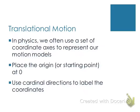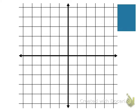I'm going to place the origin where the motion is starting, and then use cardinal directions to label the coordinates. The four cardinal directions are north, south, east, and west. On a flat two-dimensional coordinate system, north is up, south is down, east is right, and west is left.